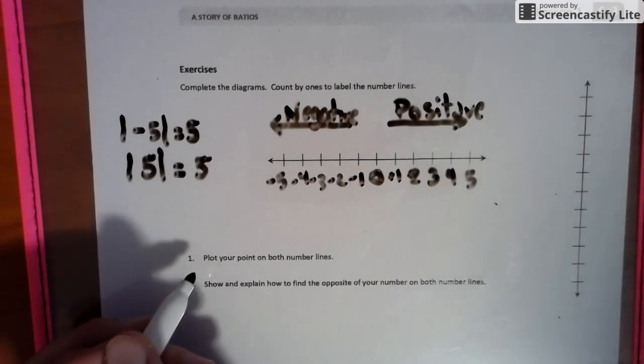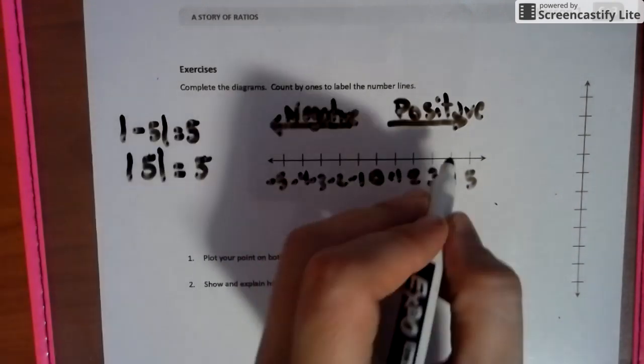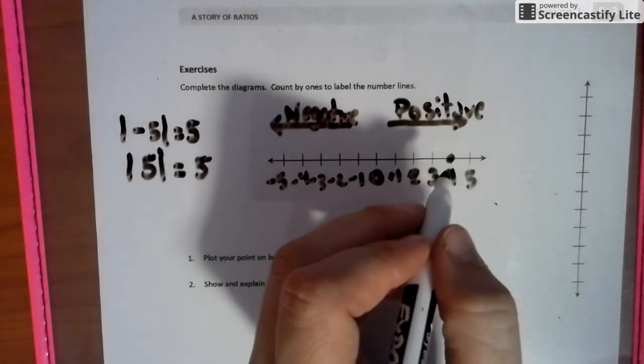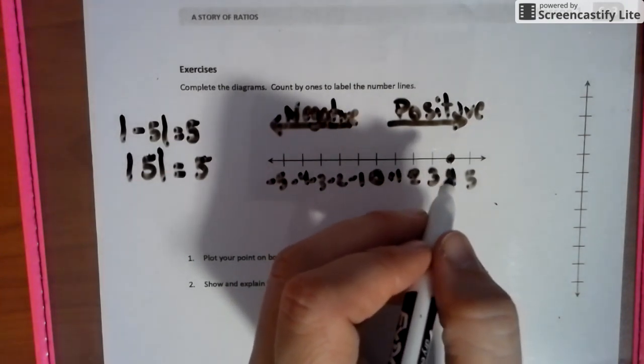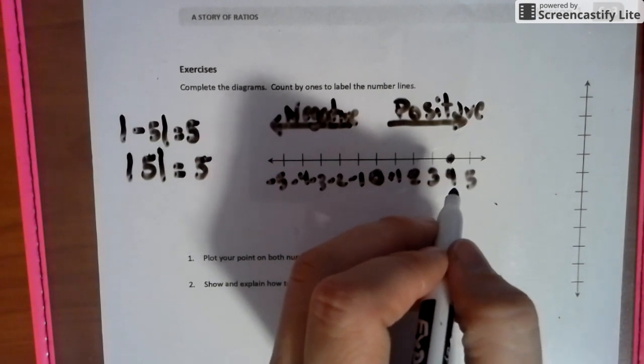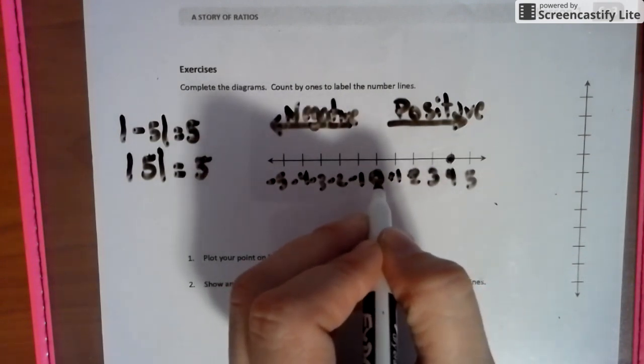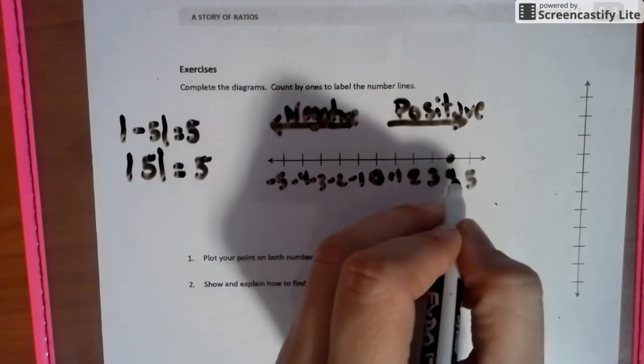So now we're going to plot a number on this number line. Let's say four. I'm going to plot four. And now we're going to look at what is the opposite of a positive four. So we find zero, which is the center.